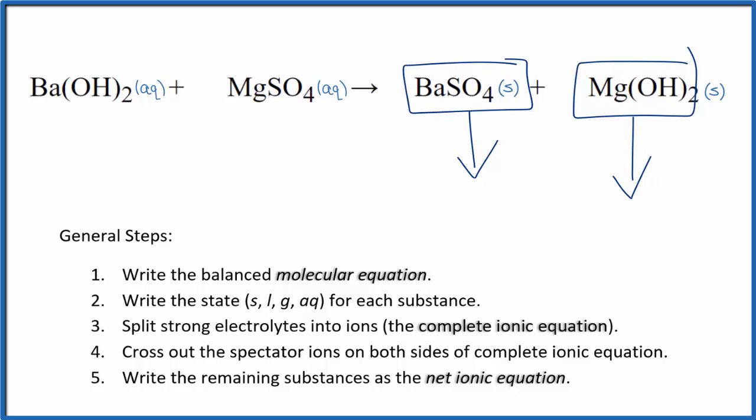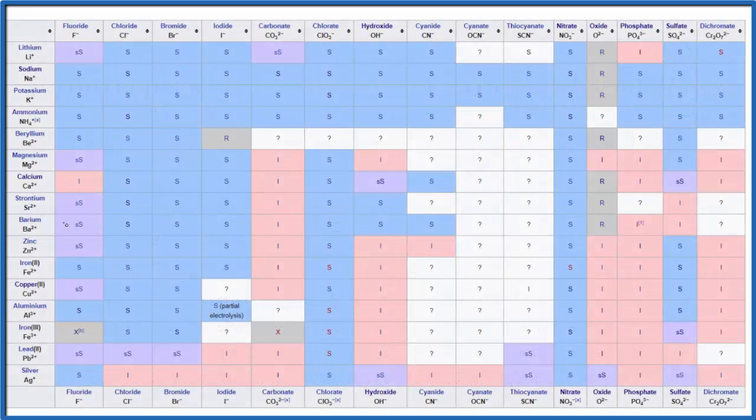But let's look at these on a solubility chart, just to make sure. So we go down, we find barium, and then we're looking for the sulfate. That's way over here. So we'll go across, and this is insoluble for barium sulfate, that means it's not going to dissolve. It'll fall to the bottom as a precipitate.